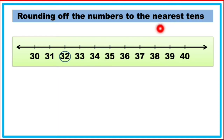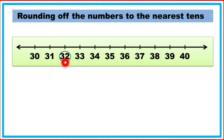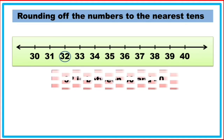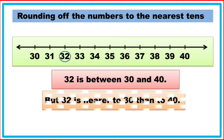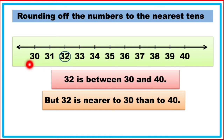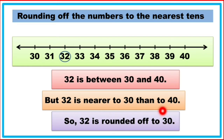First of all, beta, I will teach you rounding of numbers to the nearest tens. How do we round off the numbers? Let's see — we have to find the rounding number of 32. Now, 32 is between 30 and 40. 32 is nearer to 30 than to 40, so 32 is rounded off to 30. The rounding number of 32 is 30.